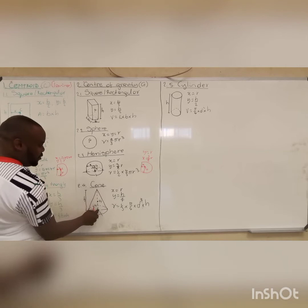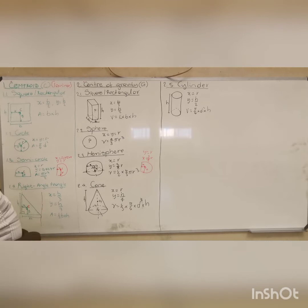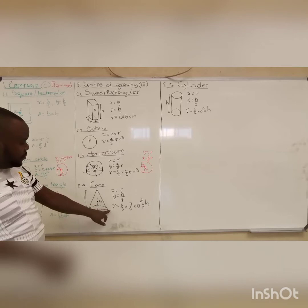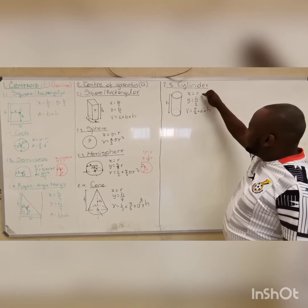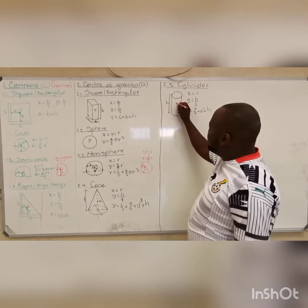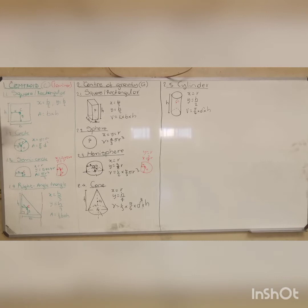The last shape is the cone. For the cone, your center of gravity is symmetrical, so your x is equal to your radius and your y is h over 4. You must memorize the volume of your cone. For the cylinder, the center of gravity acts at the center of the cylinder. This is your x and your y for the cylinder. Each and every shape — you must know where the center of gravity is and be able to calculate the area or volume for each shape.